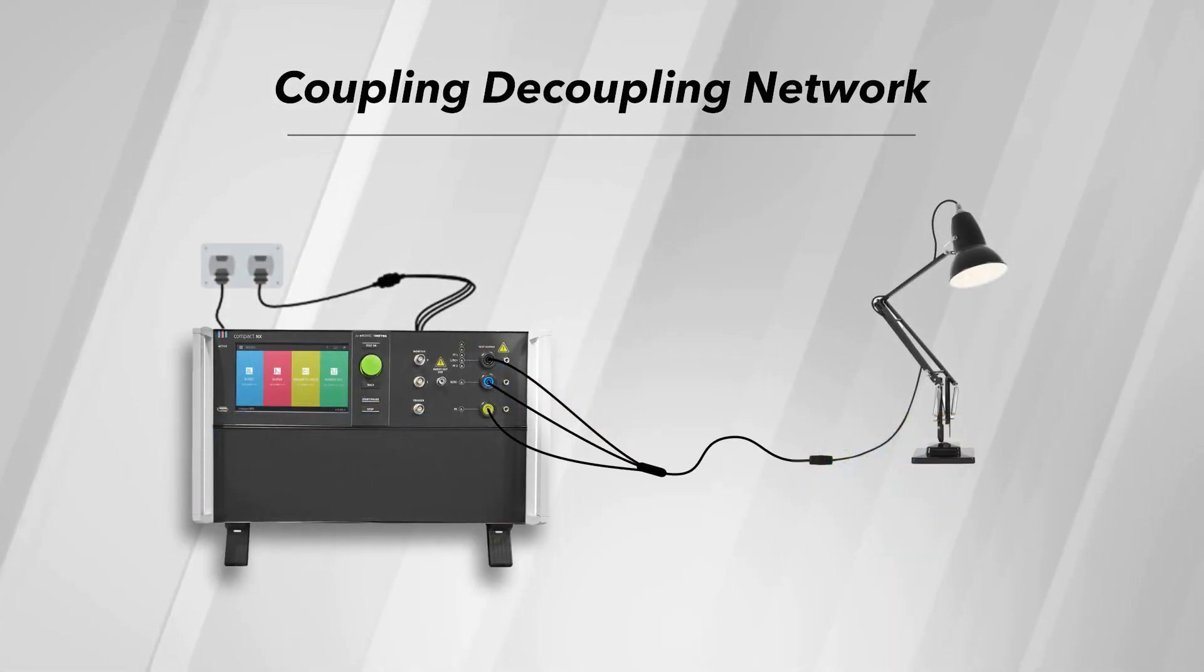The CDN is designed to allow for the injection of the associated surge onto the line and subsequent removal, ensuring auxiliary equipment isn't also subjected to the interference.